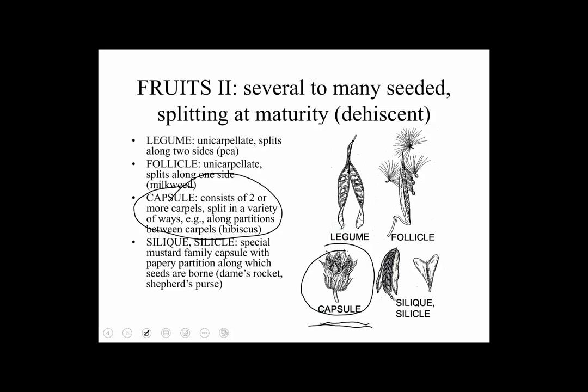A more specialized but important fruit — considering it's in an important family — is the legume. The legume comes from one carpel, a unicarpellate gynoecium. It typically splits along both sutures: the marginal one and the mid-vein one, corresponding to the ancestral megasporophyll used to form the carpel. It's found in the Fabaceae and a few closely related families.